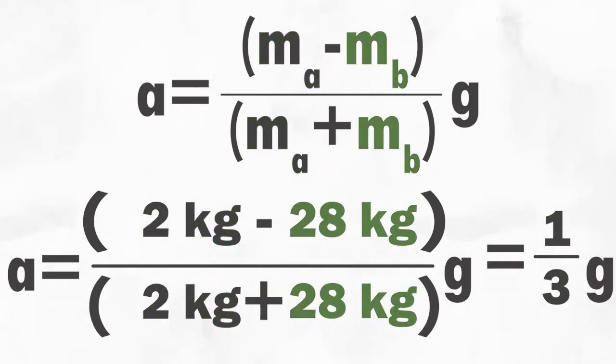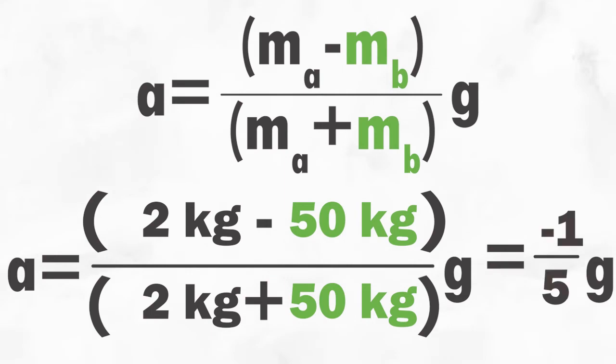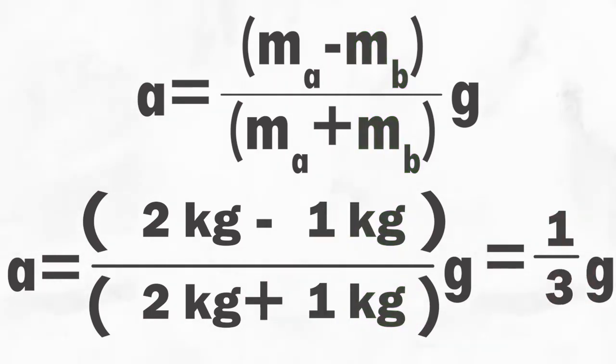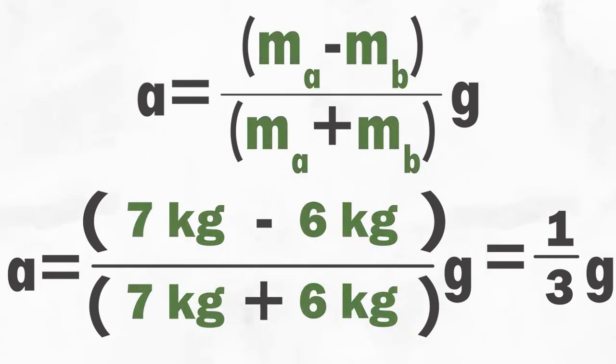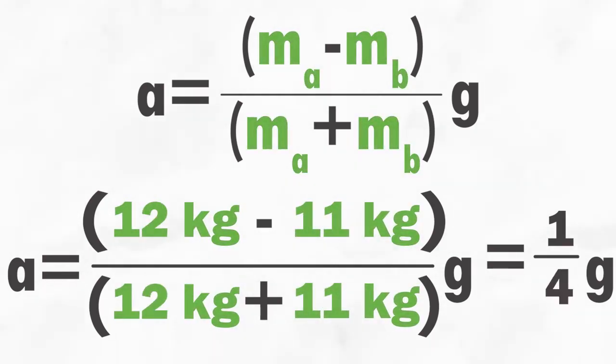Likewise, an increase in mass B also results in a greater magnitude of acceleration, but in the opposite direction. Equally interesting is that if both the masses increase by the same amount, the relative difference actually decreases, resulting in a smaller acceleration.